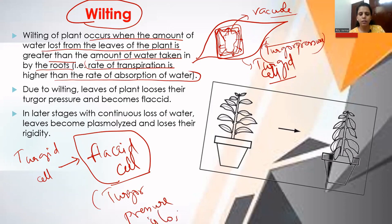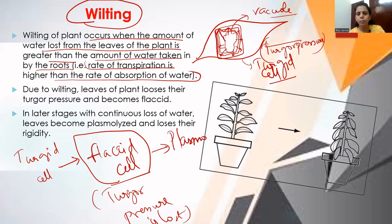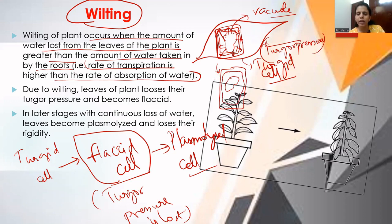If there is continuous water loss from leaves and the rate of absorption remains very low, the flaccid cell becomes a plasmolyzed cell. In a plasmolyzed cell, turgor pressure is completely lost, the vacuole shrinks, and the cell membrane completely separates from the cell wall.